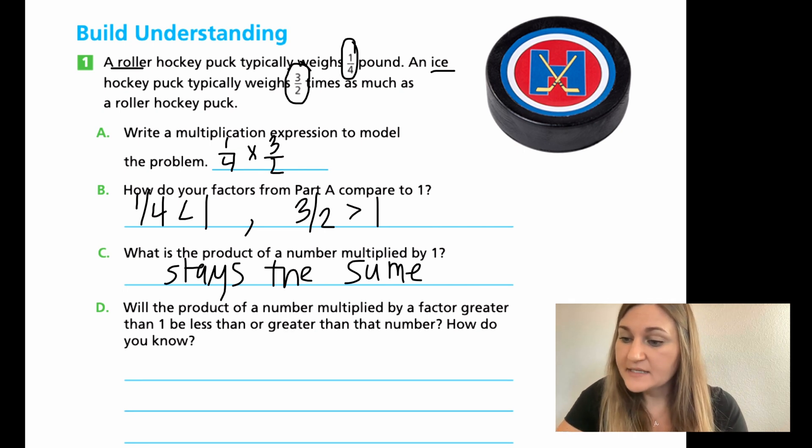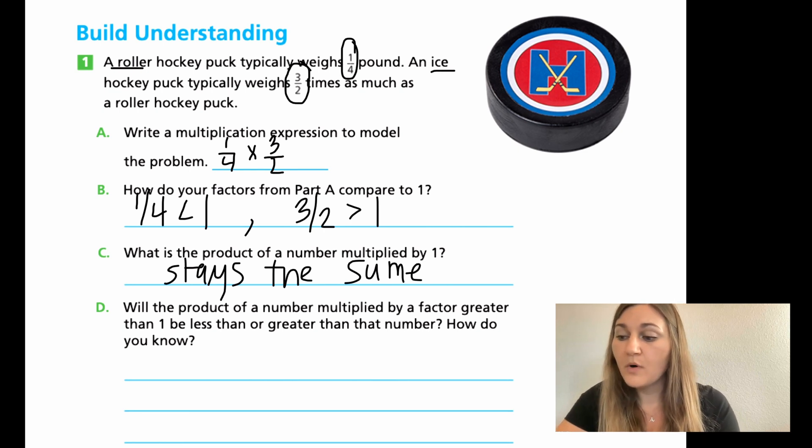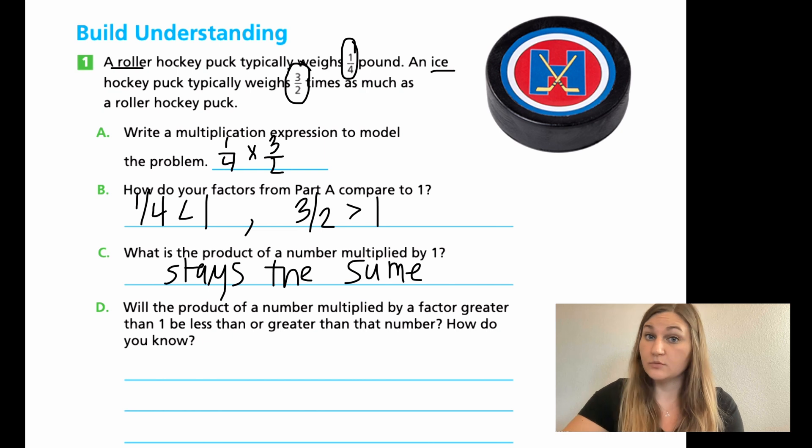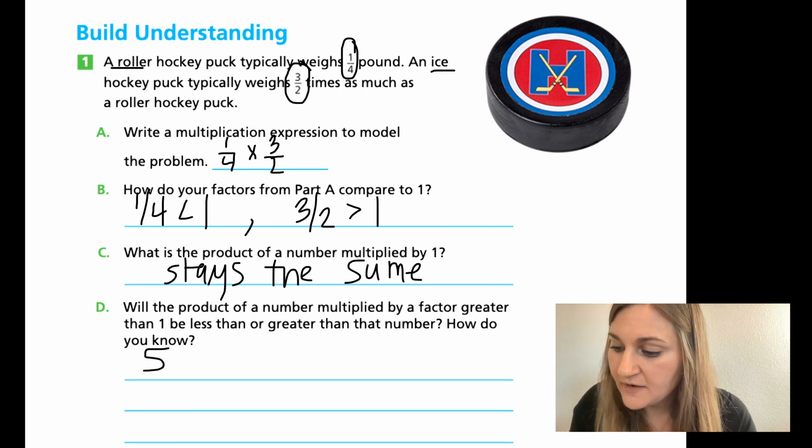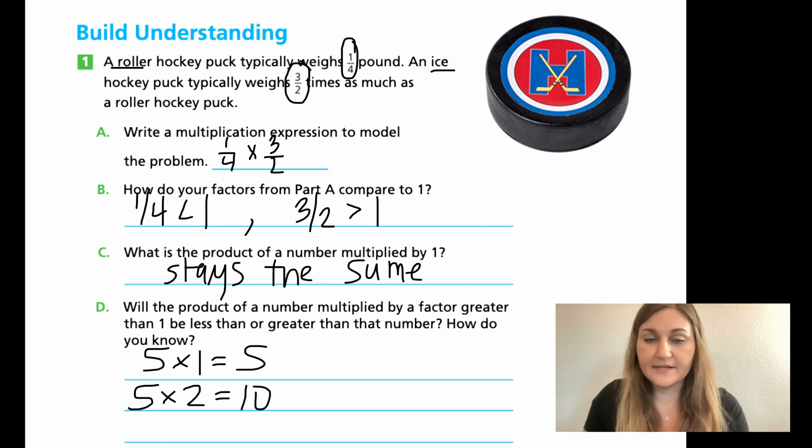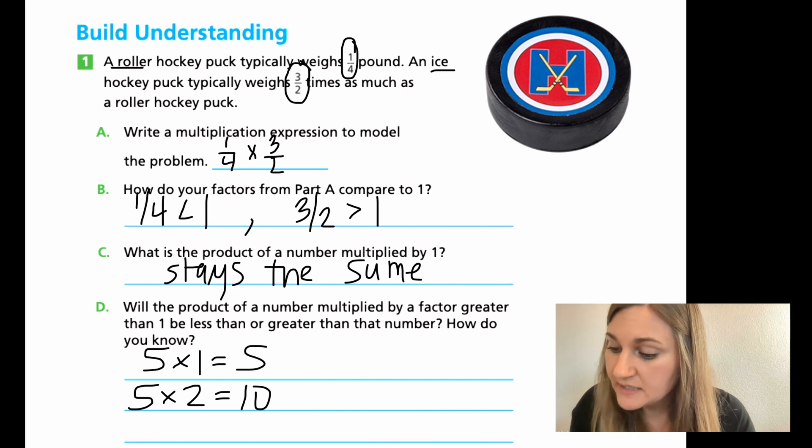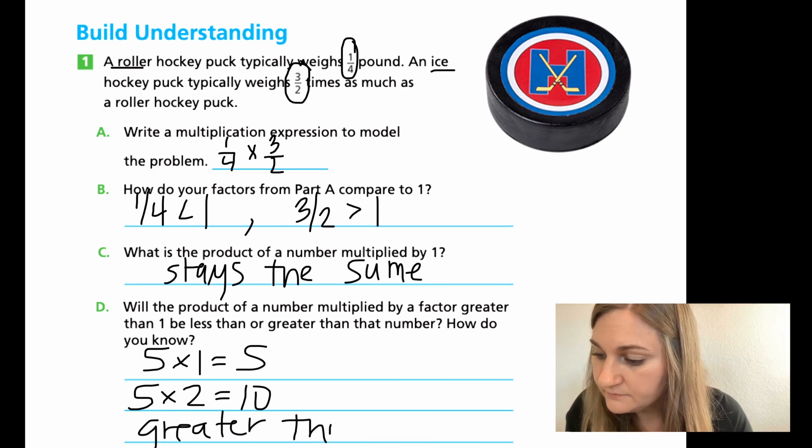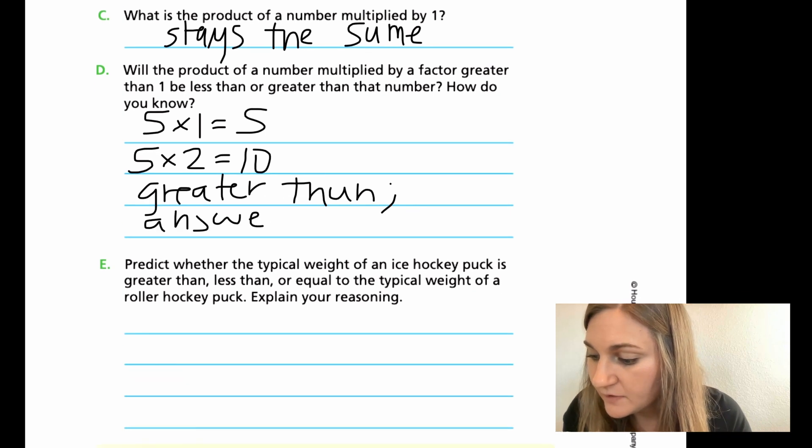So for D, it says, will the product of a number multiplied by a factor greater than one be less than or greater than that number. And how do you know? So will the product of a number multiplied by a factor greater than one, what's greater than one, two. So if I take a number and I multiply it by two, will the answer be bigger or smaller? The number gets bigger, right? And how do you know? Well, because the answer gets bigger. So let's just say if I started with five times one, I know that's equal to five, it stayed the same. But then if I take that same number and I do it times two, the answer gets bigger. So to answer the question, it's going to be greater than, and it's because the answer gets bigger or answer is larger.